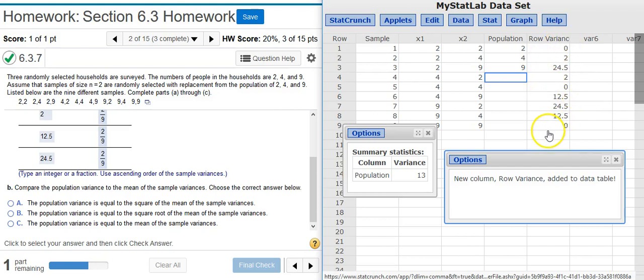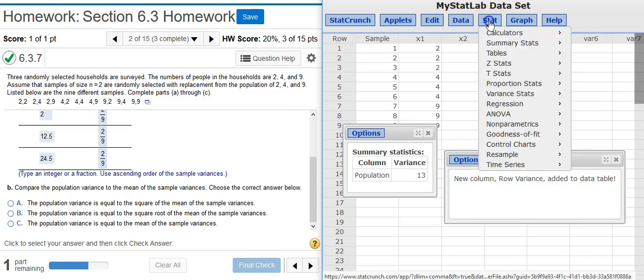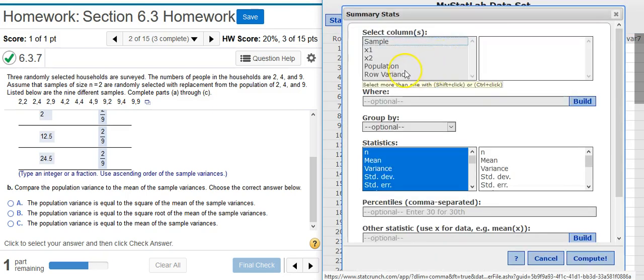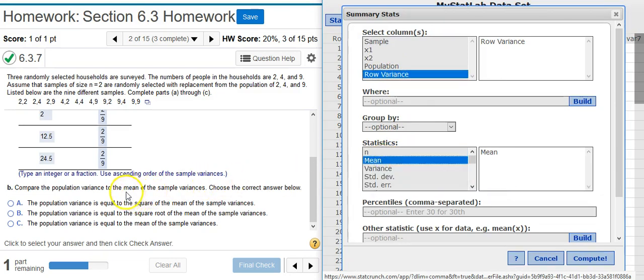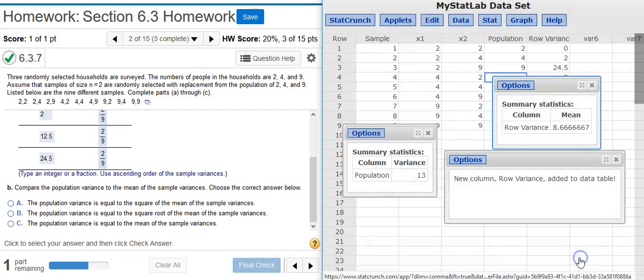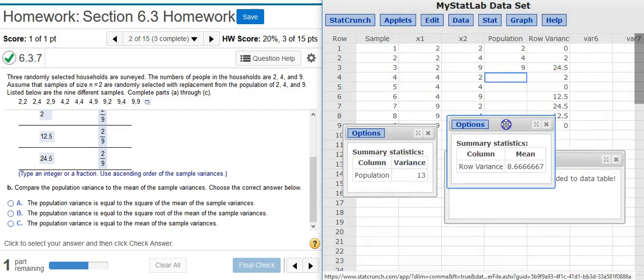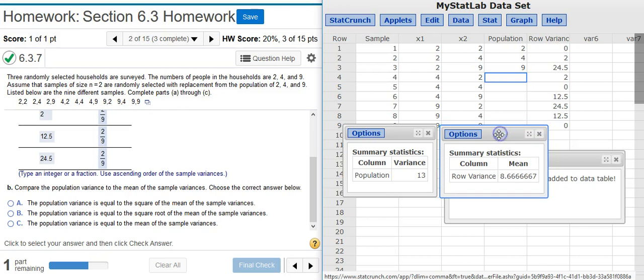We can then run calculations off of those numbers in StatCrunch. So notice here how the values that were in the table have now been put here from that separate window into the data table. Now I can just go to Stat, Summary Stats, Columns, select that new column. I want the mean of the sample variances, so I'm going to select the mean here for my sample statistic. And out comes the value that I'm going to be comparing with.